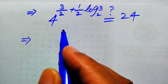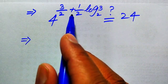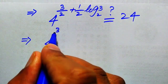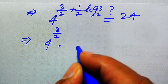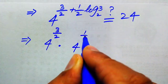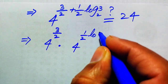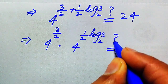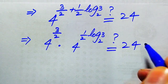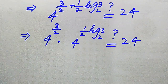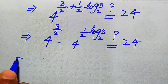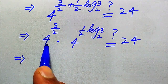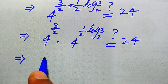We first break the exponent, and it becomes 4 to the power of 3 over 2, multiplied by 4 to the power of 1 over 2 times log 3 with base 2. We check if this equals 24. We rewrite the base 4 in prime factors form: the prime factors of 4 are 2 squared.